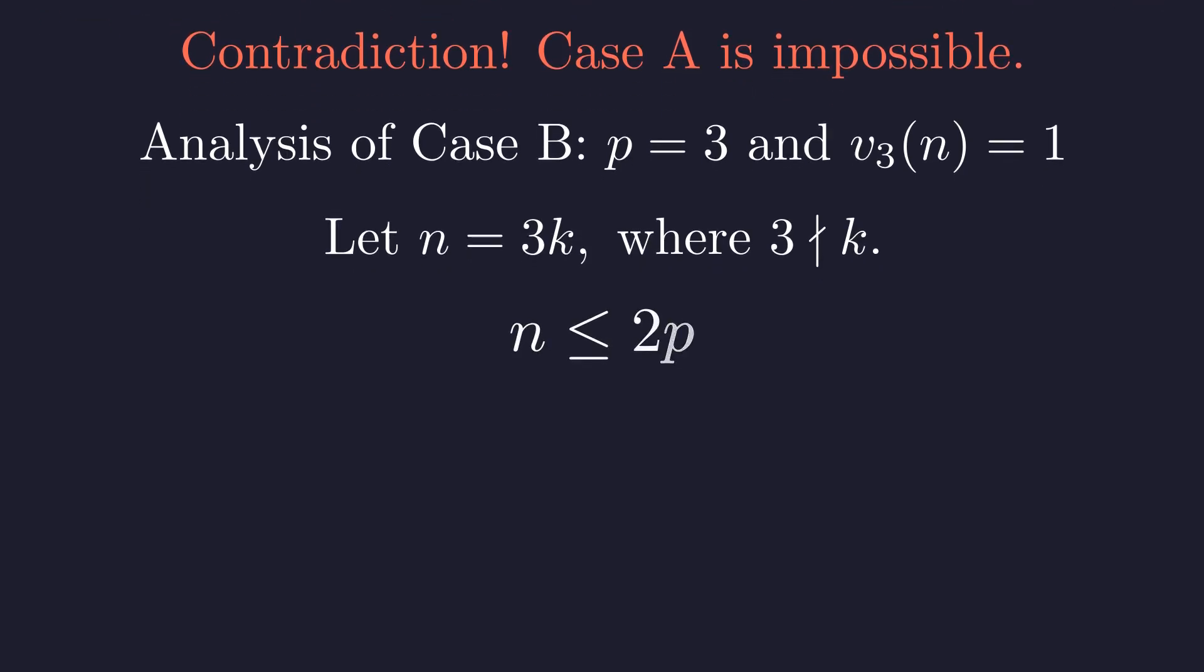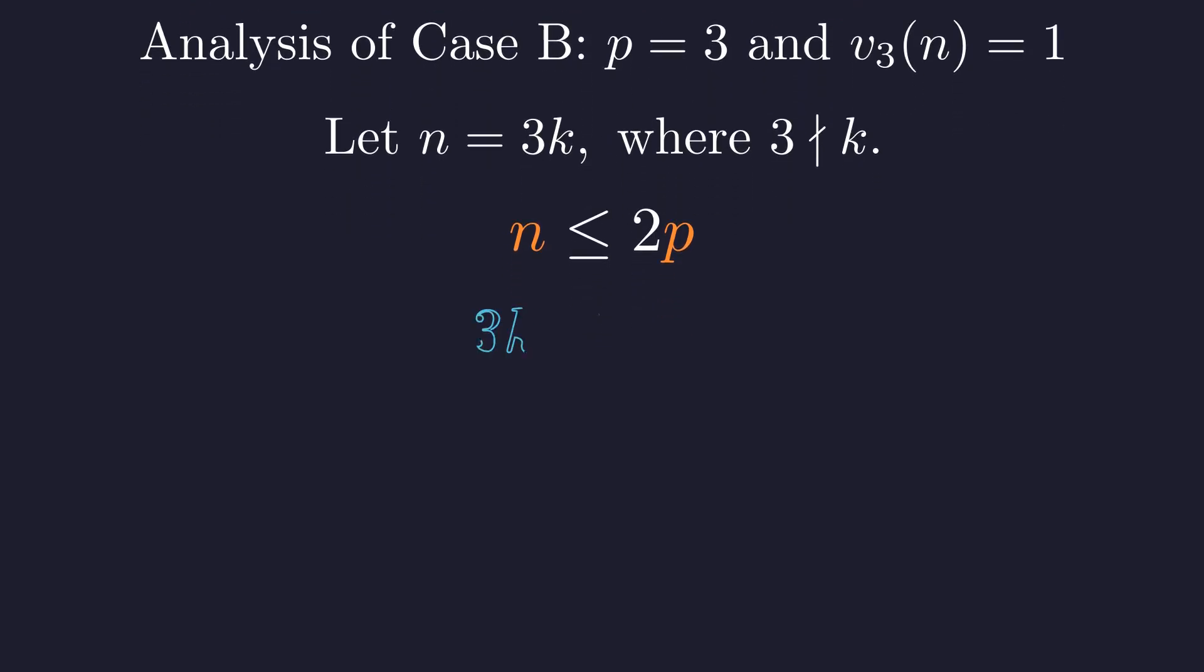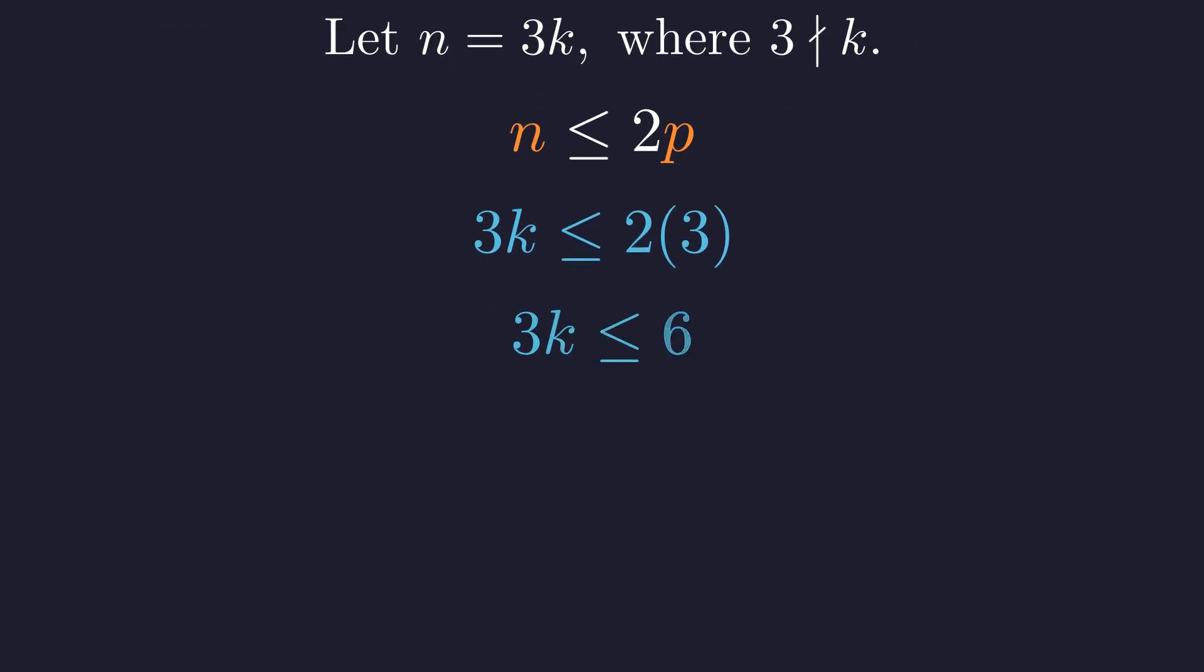This is the condition. We substitute the values from this case: n equals 3k and p equals 3. Substituting these values gives the inequality 3k ≤ 2 times 3. The right-hand side simplifies to 6. To find the possible values for k, we isolate it.